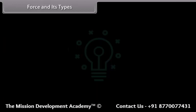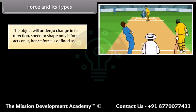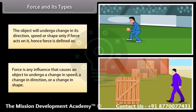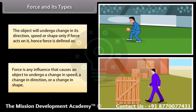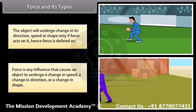Force and its types. The object will undergo change in its direction, speed or shape only if force acts on it. Hence force is defined as: any influence that causes an object to undergo a change in speed, a change in direction, or a change in shape.